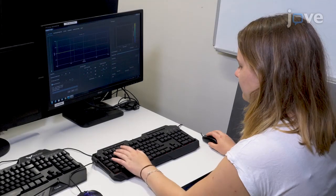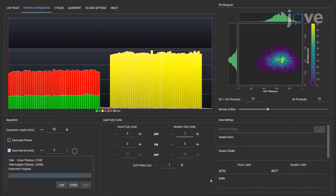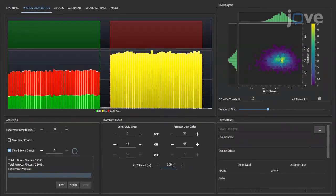In the Laser Duty Cycles panel, set the donor laser to 0 off, 45 on, and 55 off. Set the acceptor laser to 50 off, 45 on, and 5 off. Set the alternating laser excitation or ALEX period to 100 microseconds.